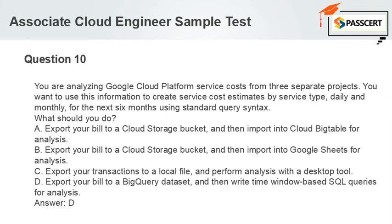Question 10: You are analyzing Google Cloud Platform service costs from three separate projects. You want to use this information to create service cost estimates by service type, daily and monthly, for the next six months using standard query syntax. What should you do? A. Export your bill to a Cloud Storage bucket, and then import into Cloud Bigtable for analysis. B. Export your bill to a Cloud Storage bucket, and then import into Google Sheets for analysis. C. Export your transactions to a local file, and perform analysis with a desktop tool. D. Export your bill to a BigQuery dataset, and then write time window-based SQL queries for analysis. Answer: D.